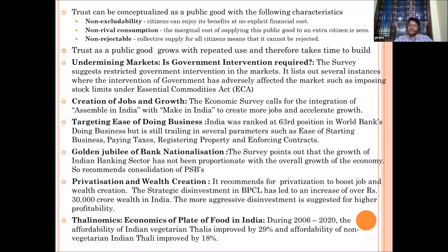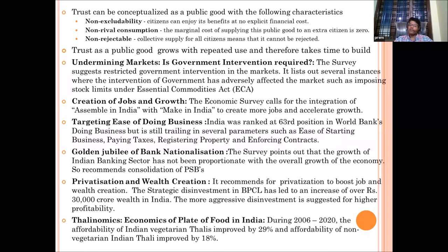On privatization and wealth creation, the economic survey supports strategic disinvestment, saying you can create more wealth by privatizing certain public sector units — the example given is BPCL. Finally on Thali Economics, it tries to show that the affordability of vegetarian Thalis improved by 29% and non-vegetarian by 18% from 2006 to 2020, suggesting that economic development is more inclusive, helping people afford food, and the hunger problem is being addressed — not as severe as projected by other indices.